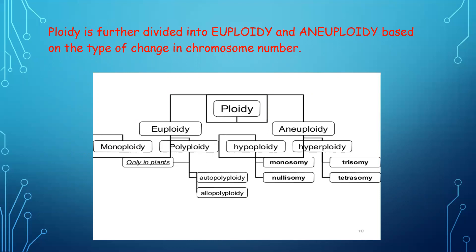Polyploidy falls under euploidy and is further divided into autopolyploidy and allopolyploidy. Autopolyploidy means the extra set of chromosomes comes from the same species. In the case of allopolyploidy, 'allo' means different — the extra set of chromosomes comes not from the same species but from a closely related species of the same genus.